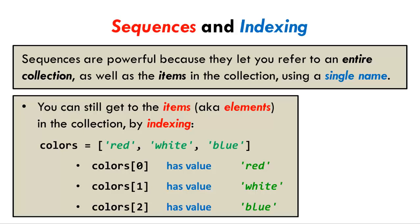Recall that a sequence in Python is a collection of data that can be referenced by using a single name. The variable colors here refers to a collection of three strings that represent colors.